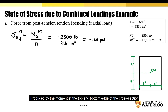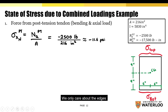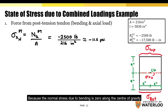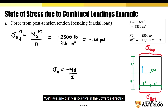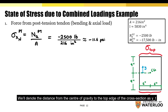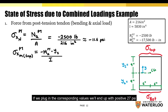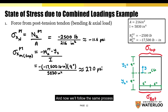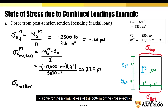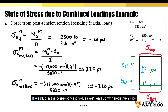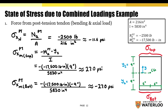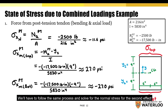Now we'll determine the normal stress produced by the moment at the top and bottom edges of the cross-section. We only care about the edges because the normal stress due to bending is zero along the center of gravity. Assuming Y is positive in the upward direction, yt is the distance from the center of gravity to the top edge, and yb to the bottom edge. The normal stress at the top is positive 27 psi and at the bottom is negative 27 psi. Now we'll solve for the normal stresses for the second effect and then sum them to get the final answer.